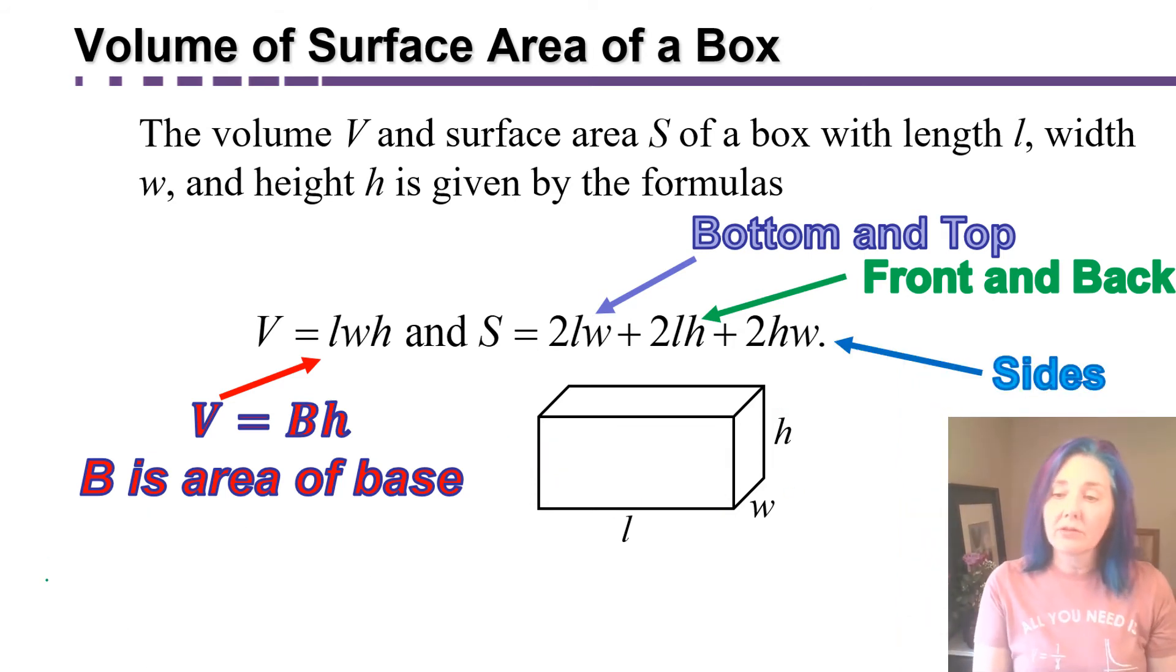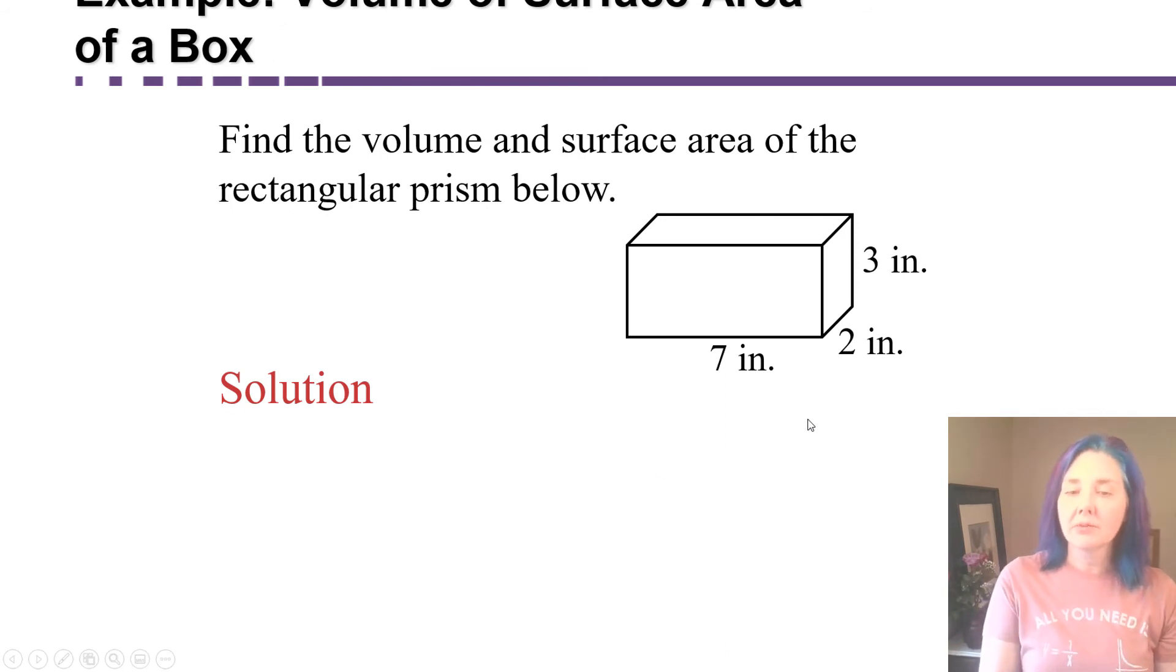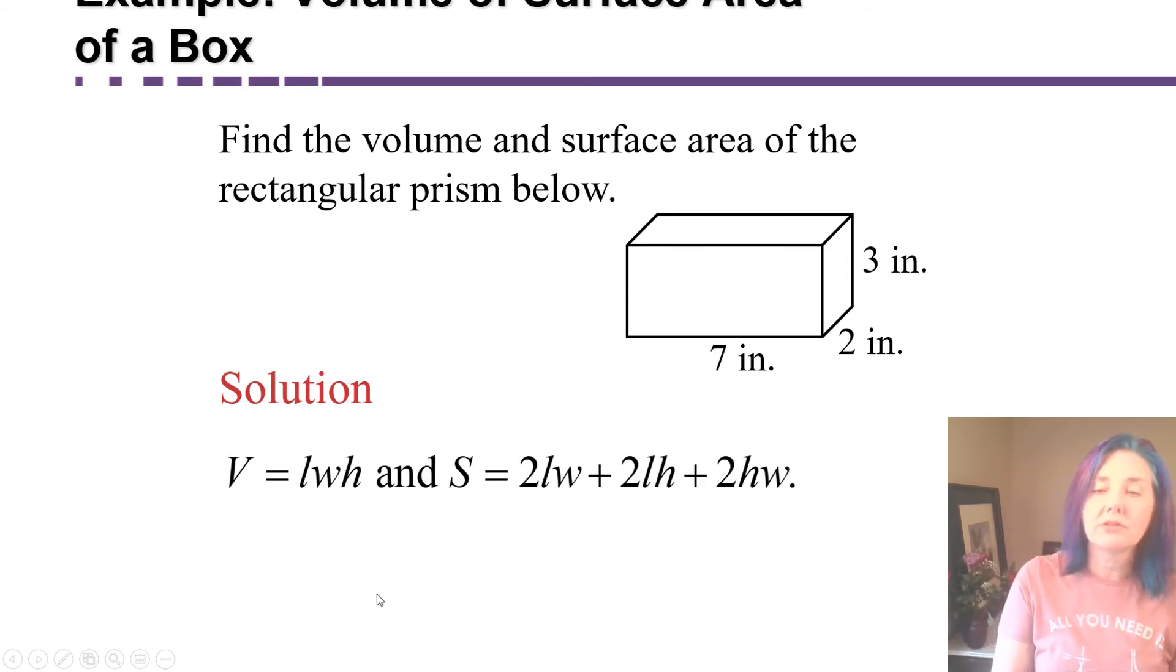So to get the area of the two sides, we need to multiply h times w. h times w gives us the area of this side of the box, and we can't see it, but there's a corresponding side back here that also has the dimensions h times w. So that's where that term comes from. Now we have formulas we can use whenever we're asked to find the volume or surface area of a box. So let's try it. Here we have a rectangular prism, also known as a box, and we're asked to find the volume and the surface area. So what you want to do is right away jot down your two formulas.